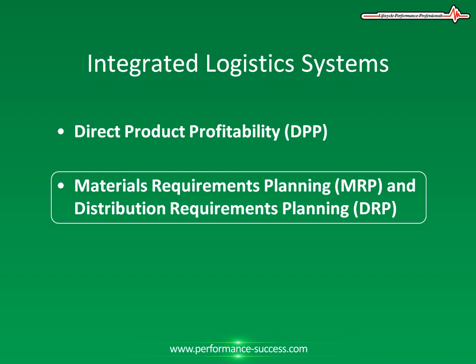Distribution Requirements Planning is the application of MRP2 techniques to the management of inventory and material flow, effective warehousing, and transportation support. DRP systems operate by breaking down the flow of material from the source of supply through the distribution network of depots and transportation modes. This is undertaken on a time-phase basis to ensure that the required goods flow through the system and are available when required at the right place at the right time — one of the classic distribution definitions.